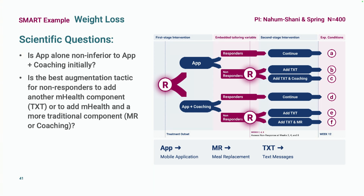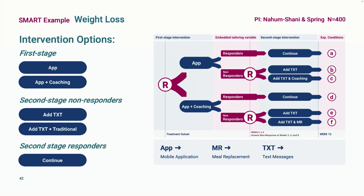In this SMART, not everyone experiences re-randomization. Some participants — our responders — are only randomized once at the beginning and then continue. Only non-responders have two randomizations. We often refer to this design as a prototypical SMART — a common design seen in the literature. Intervention options in stage one include the mobile health app alone or the app plus coaching; in stage two, non-responders get augmented and responders continue.